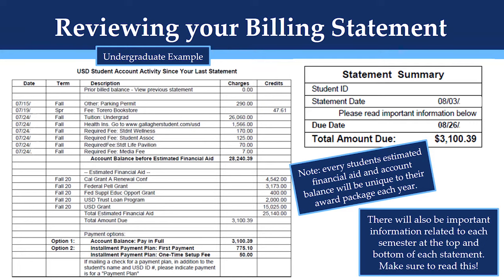This first example is of an undergraduate student billing statement which has a balance due. You will see columns on the statement for date, term, description, charges, and credits. Anything that is a charge will be under the charges column and anything that is a credit will be under credits.